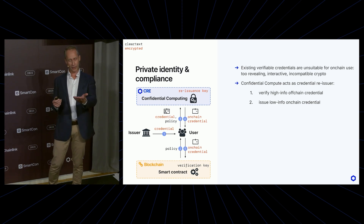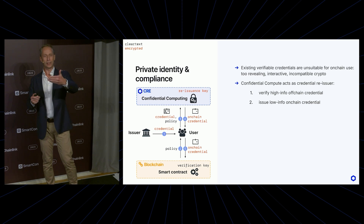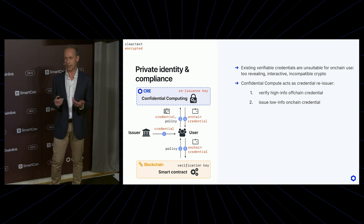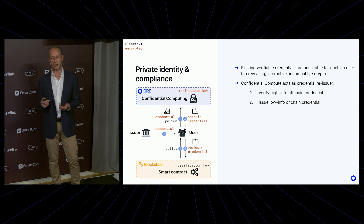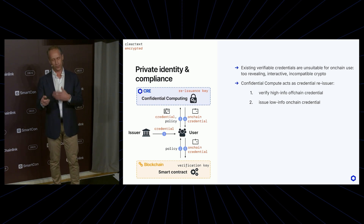They will get verified there. What the enclave does in exchange is submitting a very low-information credential — for example, 'this person has the required age' or 'has passed all KYC checks' — in a format that is efficiently verifiable on chain, so that the user can use that credential to authenticate themselves on chain. There are plenty more features you can add, but this is the basic idea.